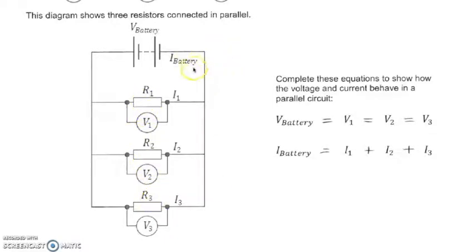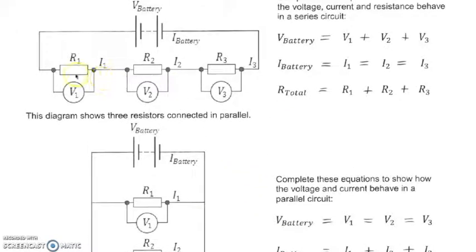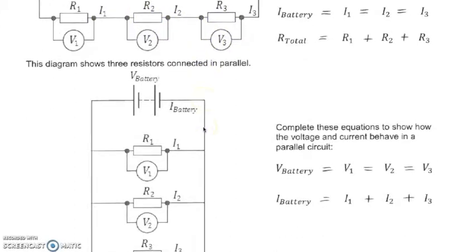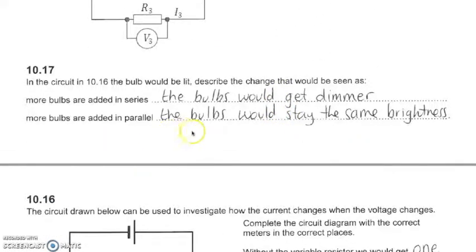The other thing you need to know is if we added bulbs one after the other in a series circuit they would actually get dimmer. However, if we added the same amount of bulbs in parallel, like these resistors are arranged, their brightness would stay the same because this rule suggests that the voltage across each branch is going to be the same as the original voltage across the battery or cell.